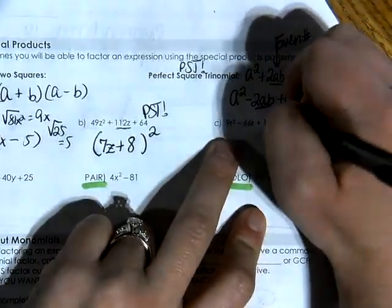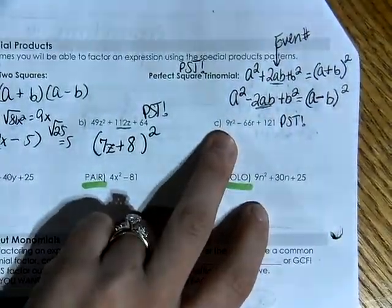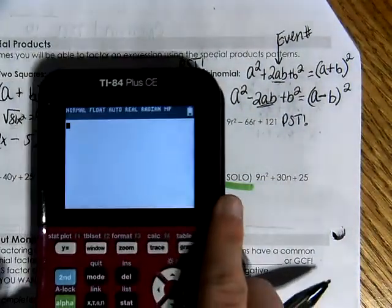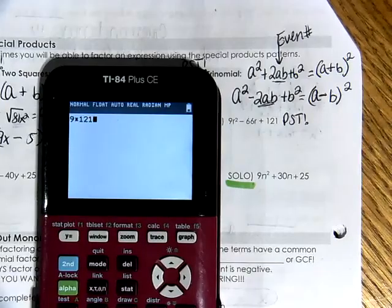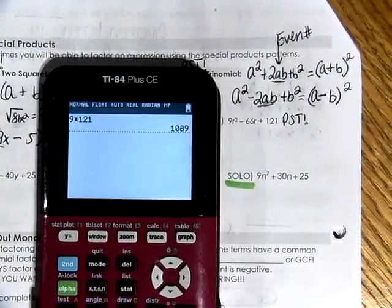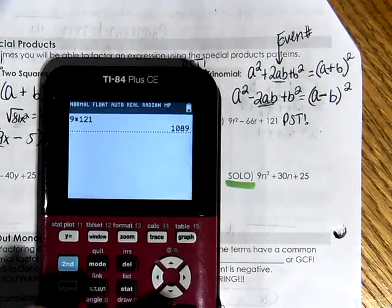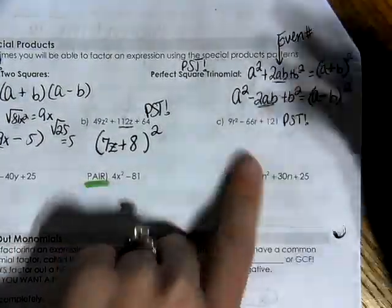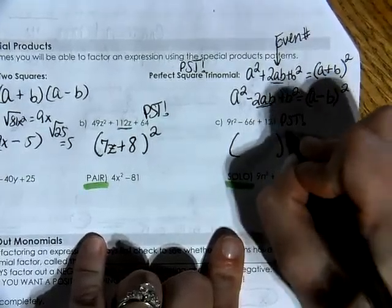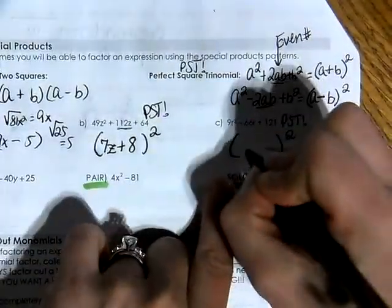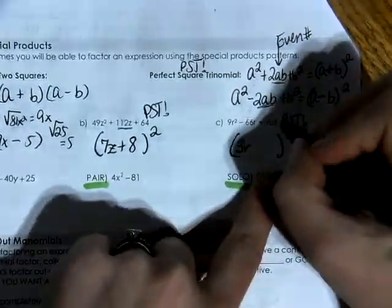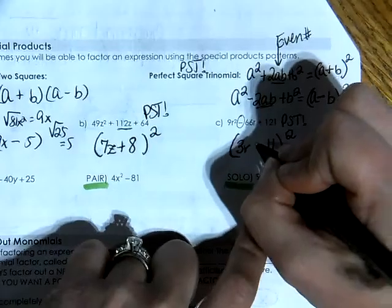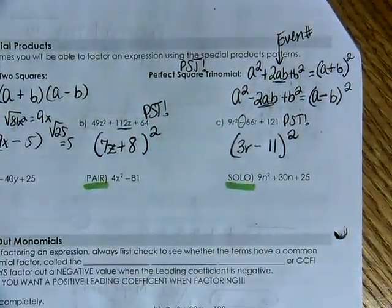Letter C is also a perfect square trinomial. First term is 9r squared, last term is 121. Using xbox would give an attic of 9 times 121 equals 1089 — nobody wants that. Recognize the pattern instead. Square root of 9r squared is 3r, square root of 121 is 11, and because the b value has a minus sign, we have 3r minus 11, squared. The next three problems are a team, pair, solo — try those on your own before class.